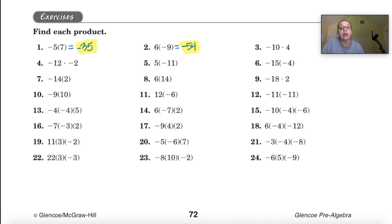Number 3 we have negative 10 times 4. 10 times 4 is 40. They have different signs so that's going to be a negative 40.